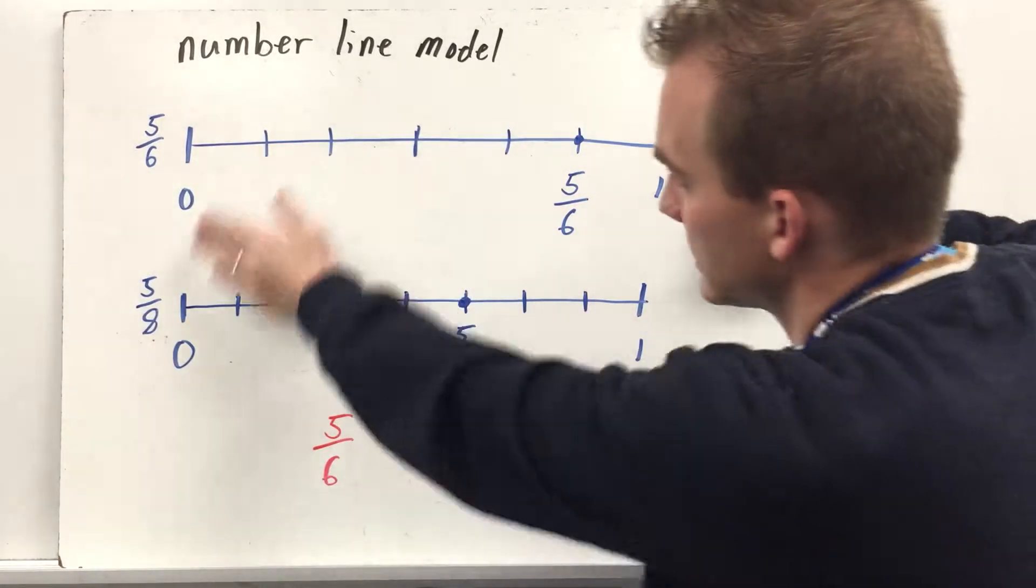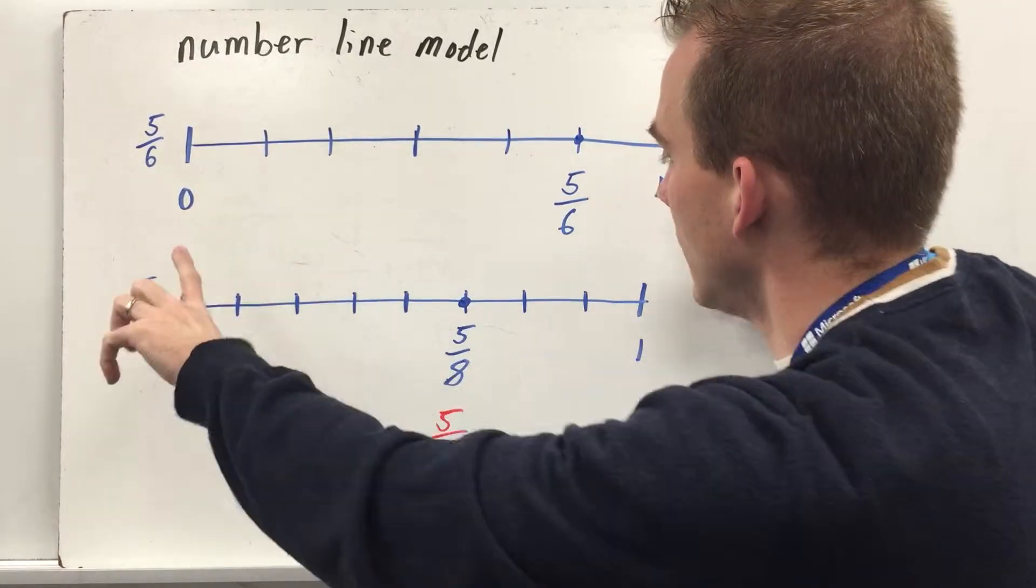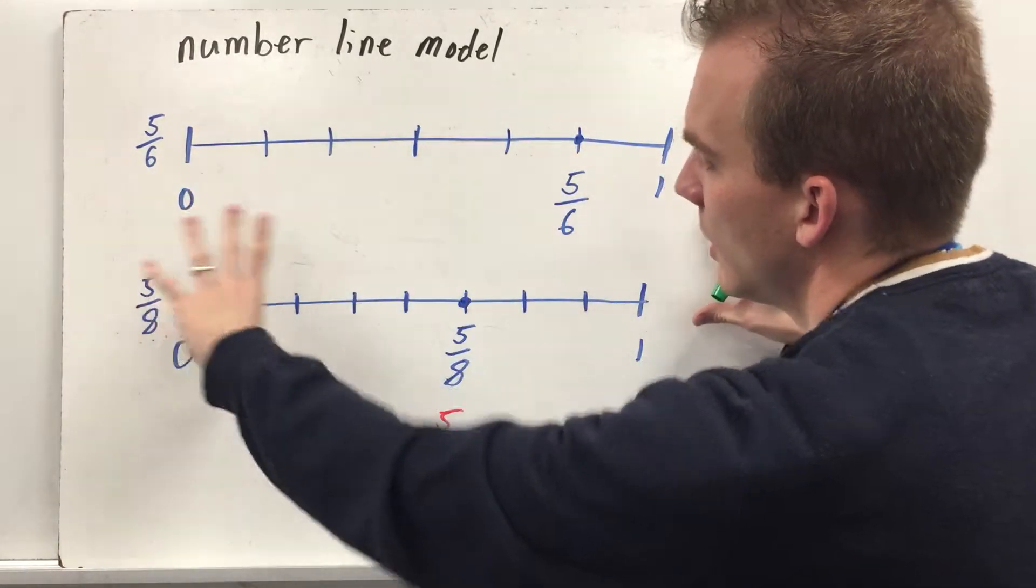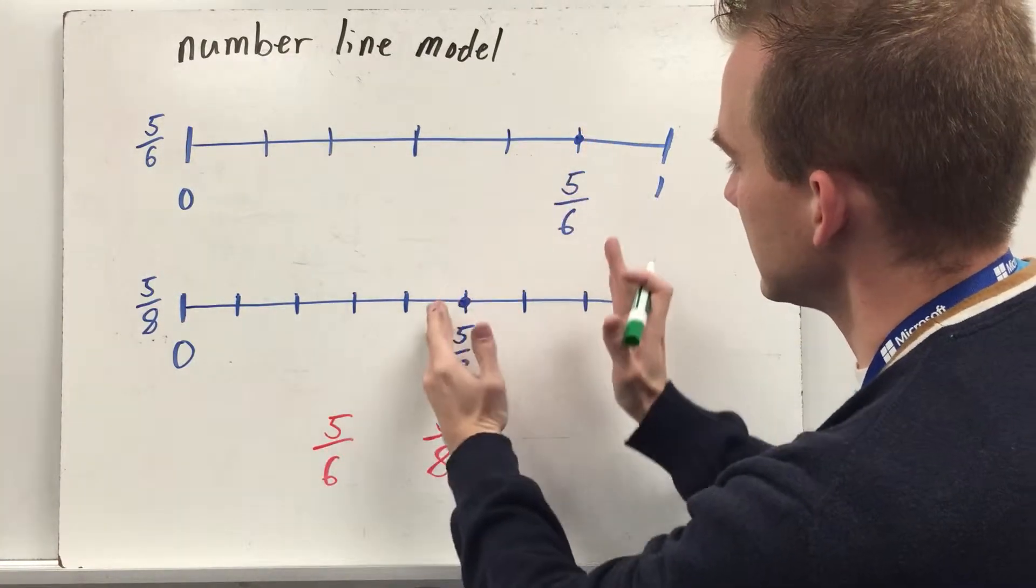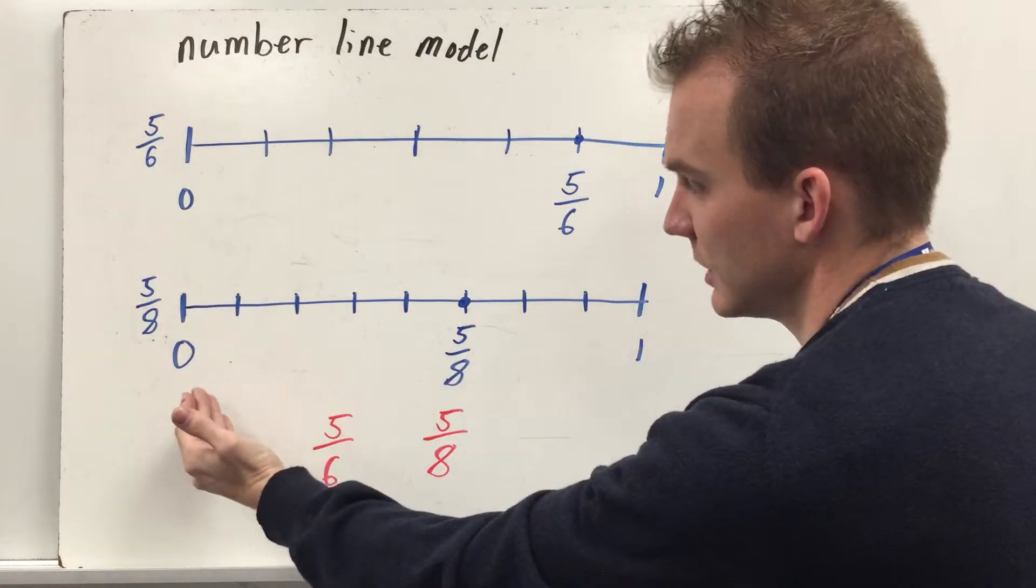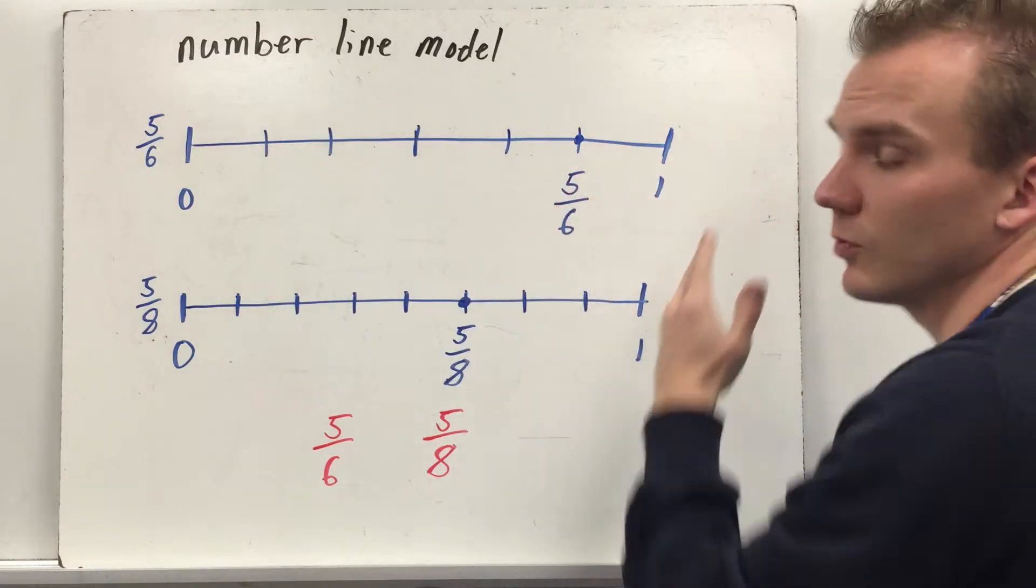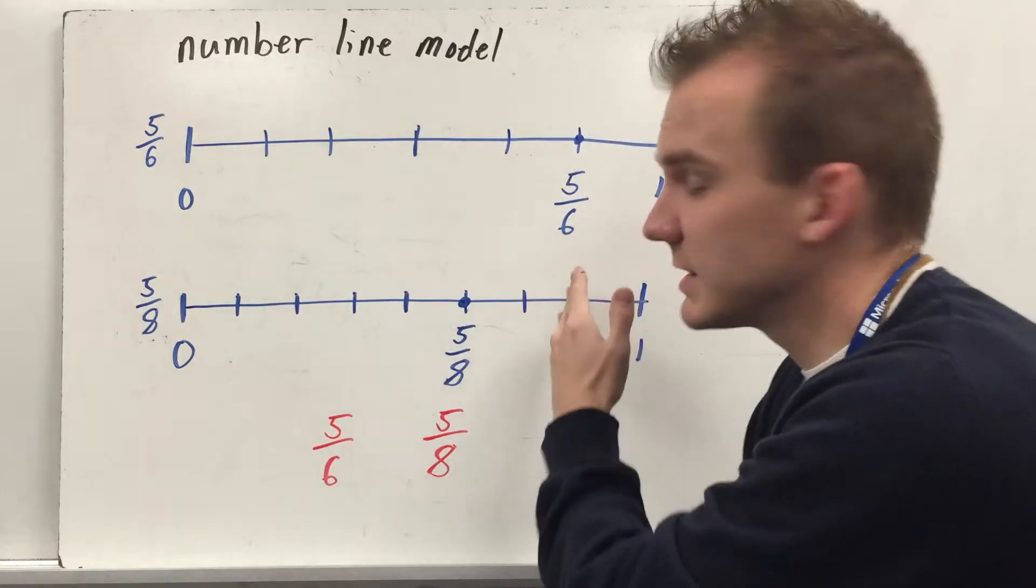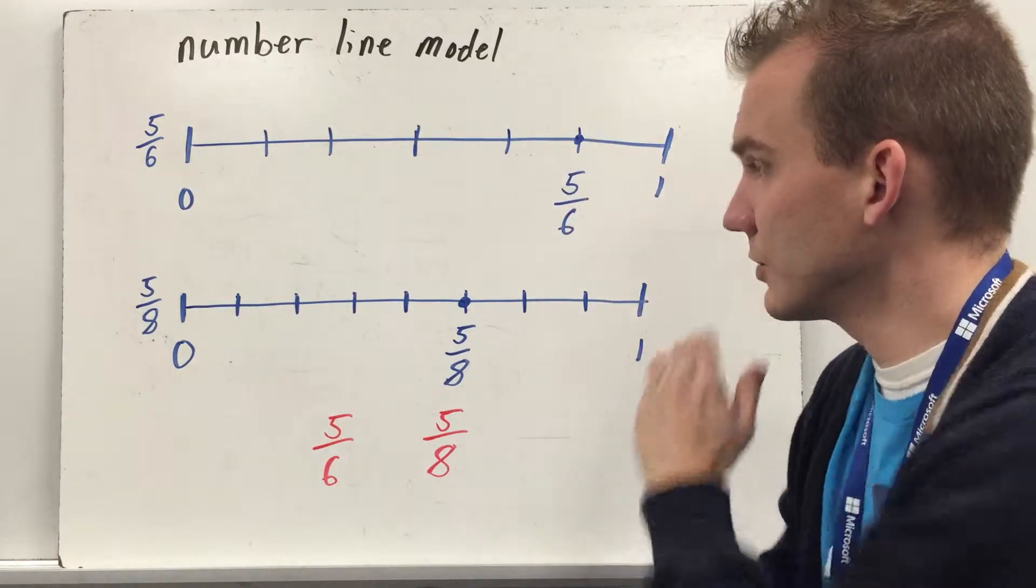Notice that my one and my zero are lined up, so my number lines are lined up to accurately compare where each fraction falls, and I can see that five-eighths is closer to zero, and five-sixths is closer to one.